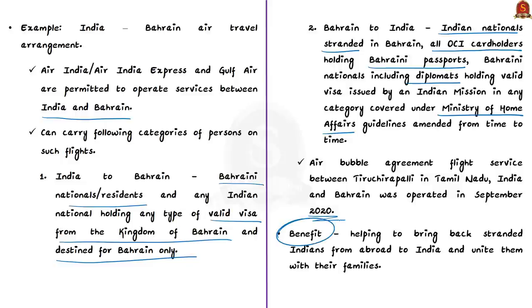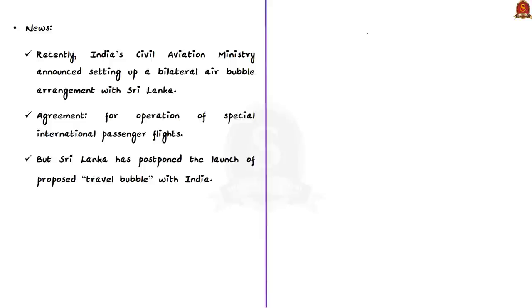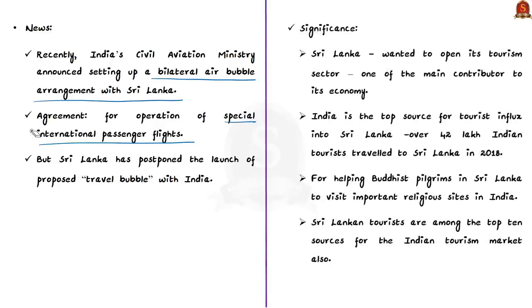The main benefit of air bubble agreements is that they helped and continue to help bring back stranded Indians from abroad and reunite them with their families. Recently, India's civil aviation ministry announced it would set up a bilateral air bubble arrangement with Sri Lanka for special international passenger flights between the two countries. However, due to surging COVID-19 cases in India, Sri Lanka has postponed the launch of the proposed travel bubble. This arrangement is important to Sri Lanka as its economy was deeply affected by the pandemic and it wanted to reopen its tourism sector.